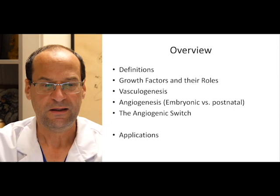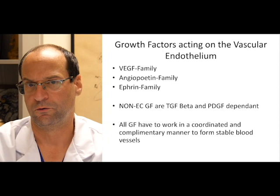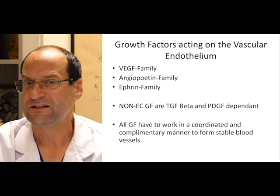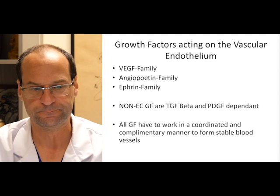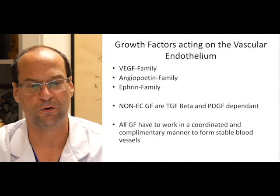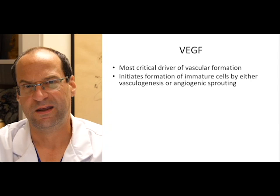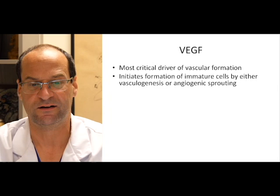To enable all of this we need different growth factors. The growth factors acting on the vascular endothelium are families of growth factors. The most important one is vascular endothelial growth factor. We also have the angiopoietins, the ephrins, and they all act on the endothelium. The non-endothelial cell growth factors are TGF-beta and platelet-derived growth factor, and all of these growth factors have to work together in a coordinated manner to form stable and mature blood vessels. The VEGF family is the most critical driver of vascular formation, initiating the formation of primary immature endothelial cells by either vasculogenesis or angiogenic sprouting.